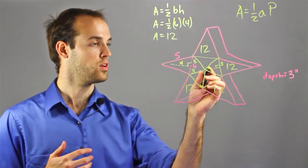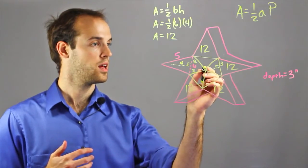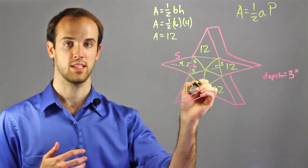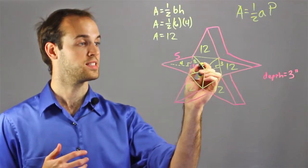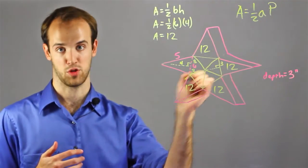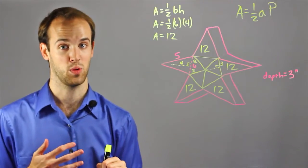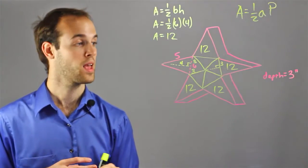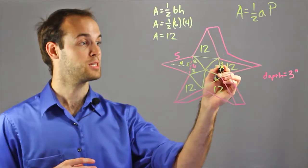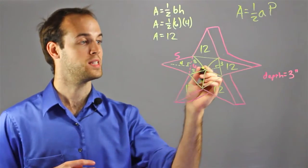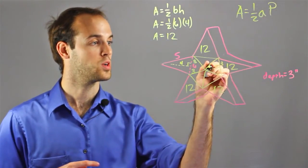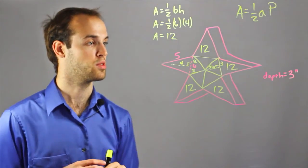And I also know that this whole angle must be 360 because it's a revolution, which means that the central angle of one of these five triangles that I drew was 72, 360 divided by five. And I know that this altitude must bisect this triangle, which means that this measurement right here is going to be 36 degrees.